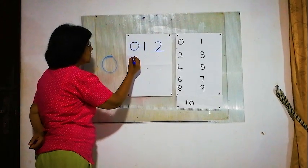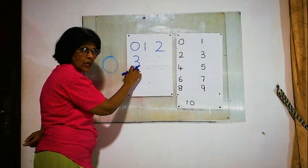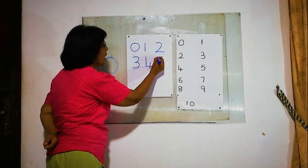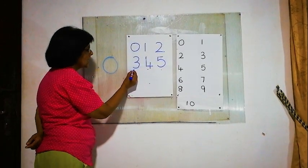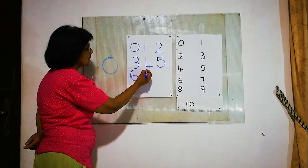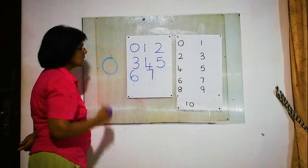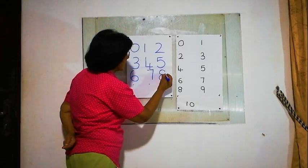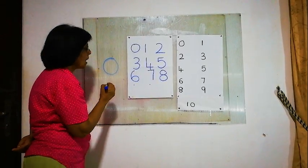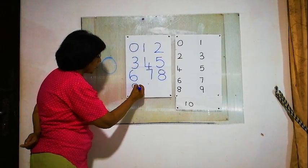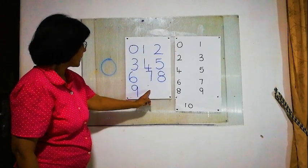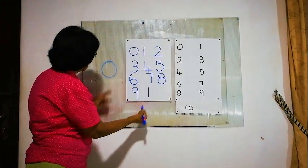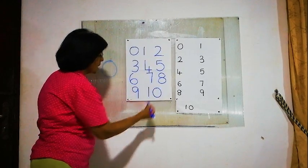After 2, 3. After 3, 4. After 4, 5. Then 6, then 7. After 7, 8. After 8, 9. After 9, the last number — 10. 1 and 0, that is 10, right?